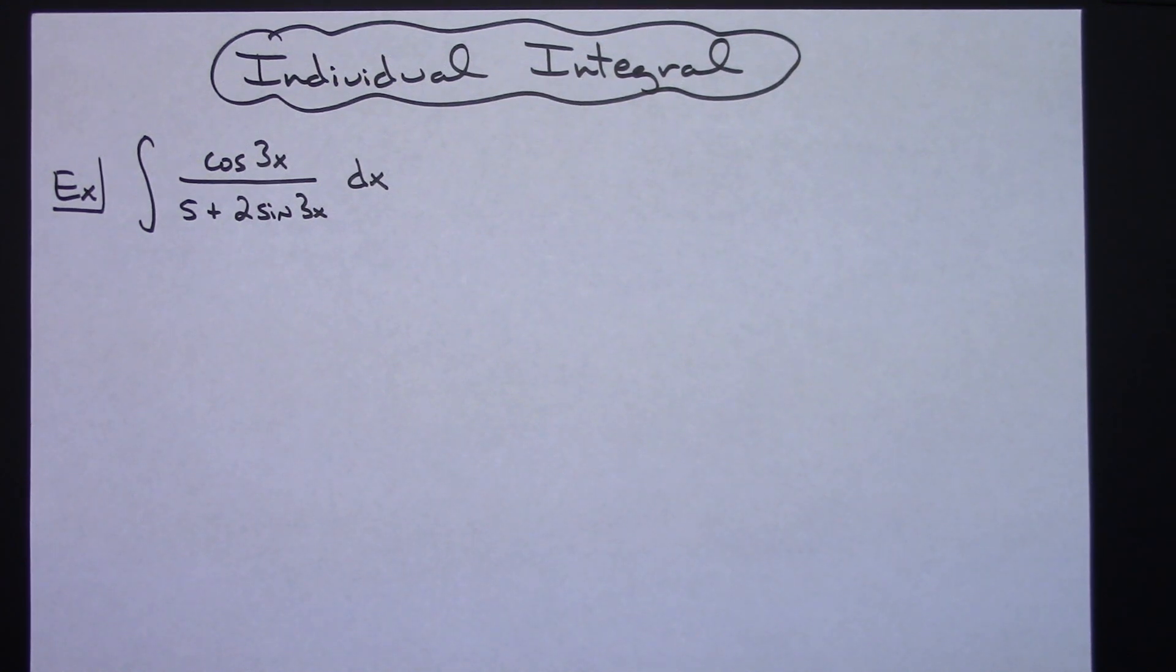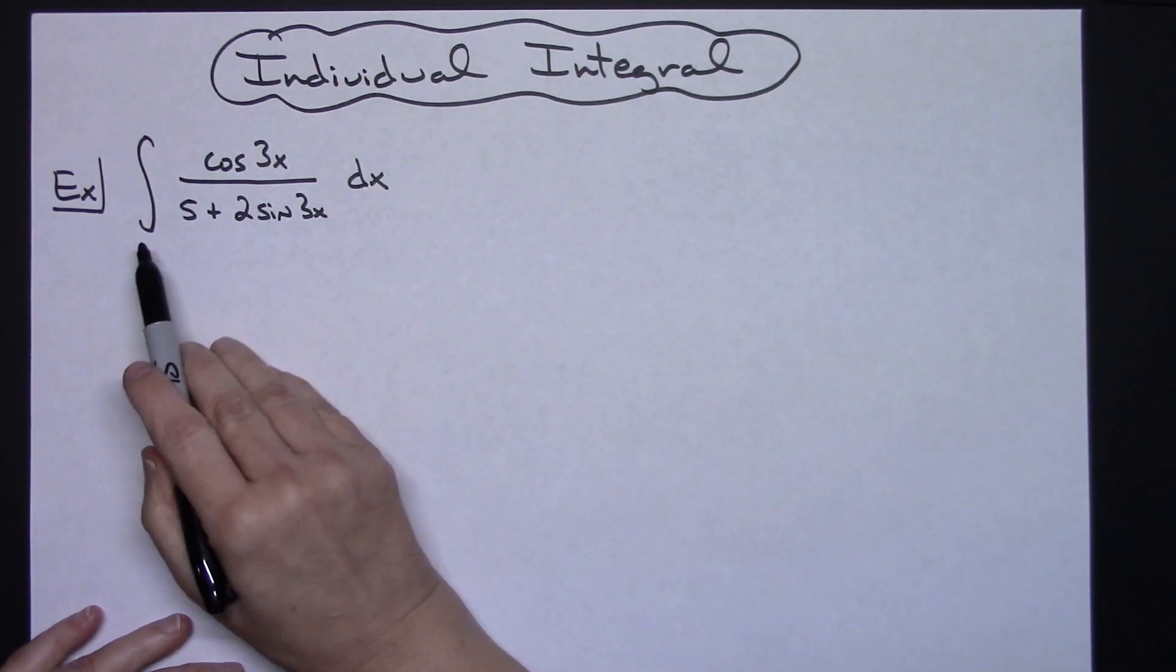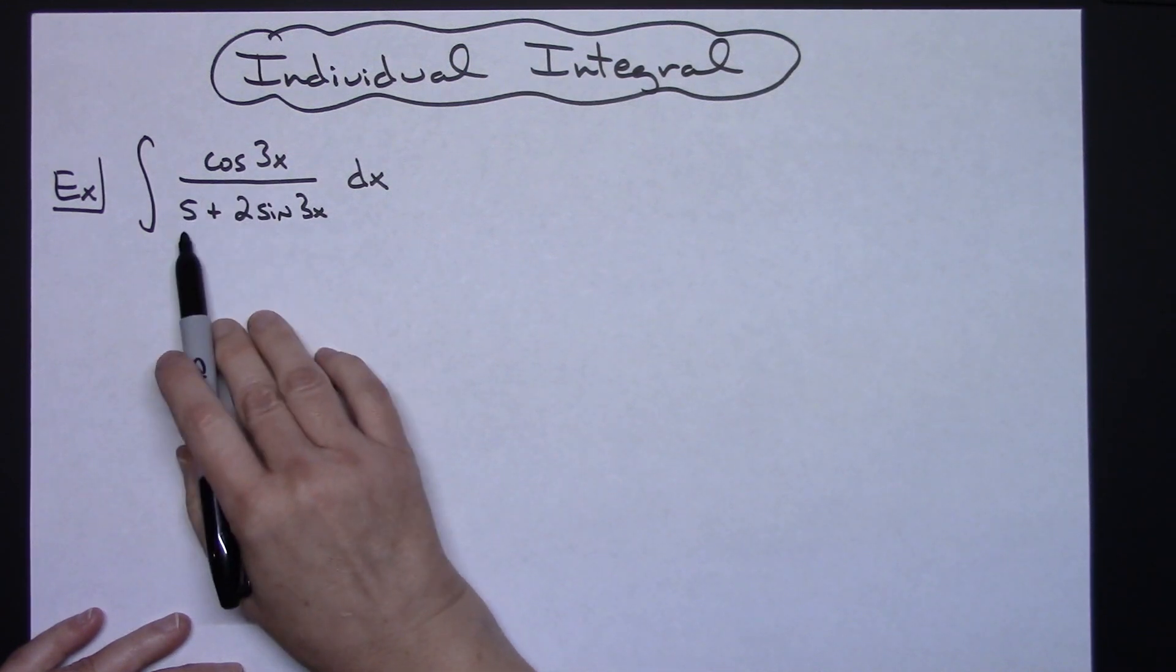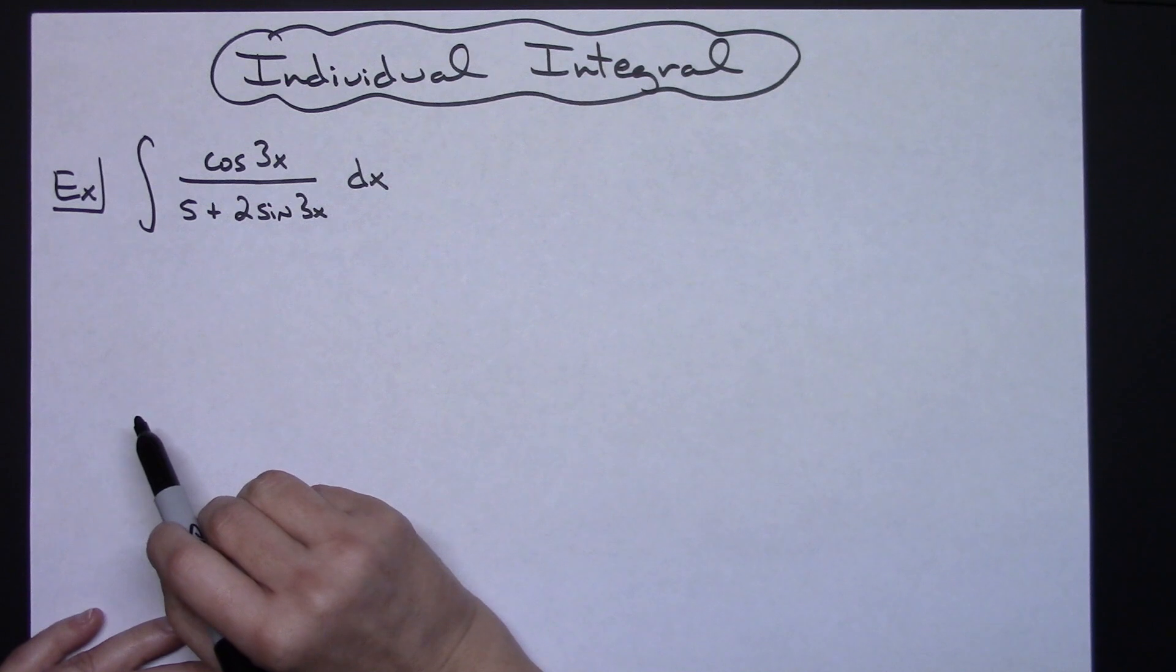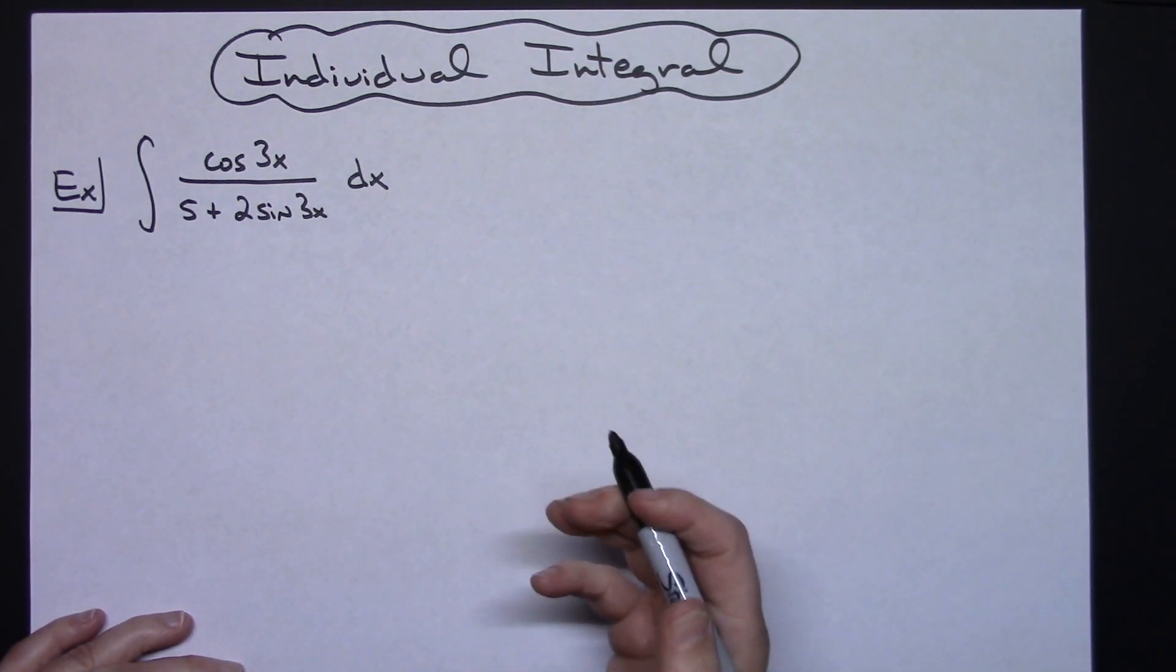In this video I'm going to be working on an individual integral. We're going to take a look at the integral of cosine 3x all over 5 plus 2 sine 3x dx. It is going to be just a straight u substitution integral.